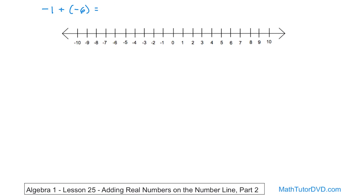Notice that we have zero here in the center. These are the positive numbers. These are the negative numbers. So we take the first number that we're adding together, which is negative one, and we put a dot on the number line in that location. So there's the value of negative one.